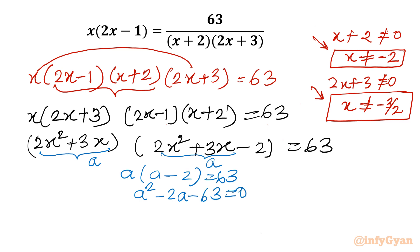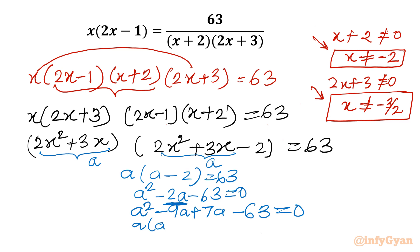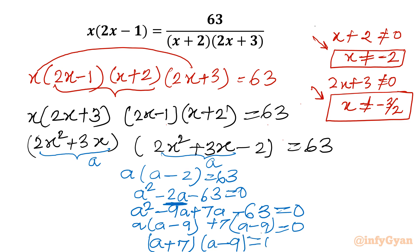Proceeding through factorization: we can split minus 2a as minus 9a plus 7a. So the equation becomes a squared minus 9a plus 7a minus 63 equal to 0. Taking a common from the first pair gives a(a minus 9), and taking 7 common from the second pair gives 7(a minus 9). This factors as (a plus 7)(a minus 9) equal to 0, giving two values of a: minus 7 and 9.